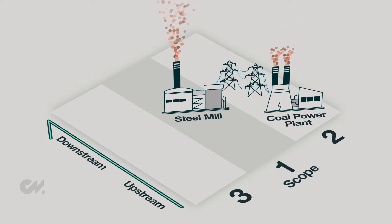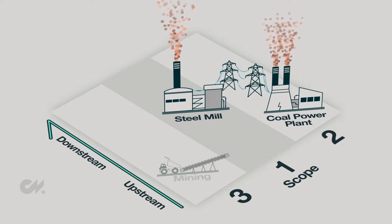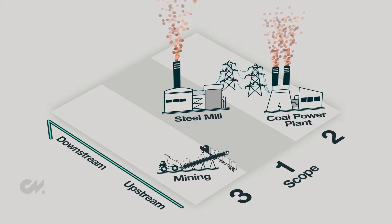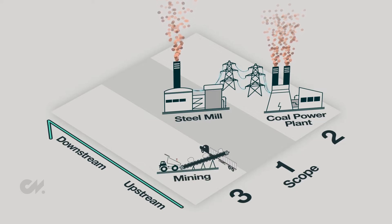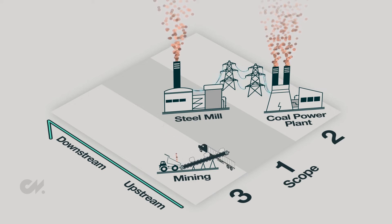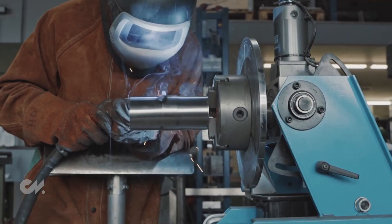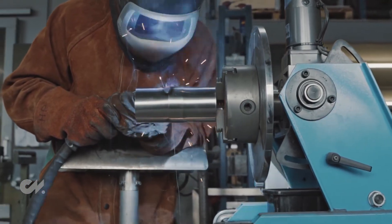And scope 3 emissions are the emissions produced in your full supply chain, both upstream and downstream from your specific business. So for that steel mill, upstream sources of scope 3 emissions include those produced during the mining and transportation of iron ore to your facility, but they also include the emissions produced during the manufacture of any equipment that you use in your facility.